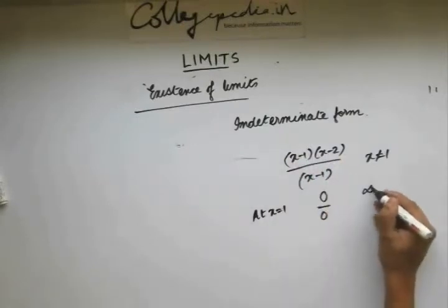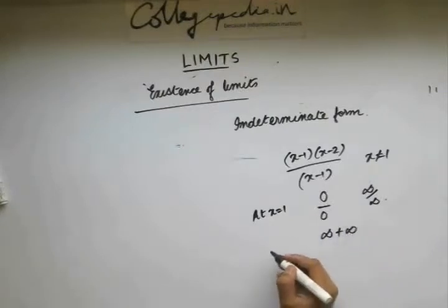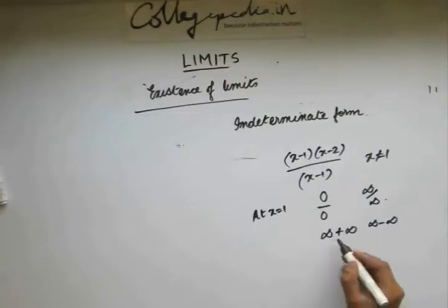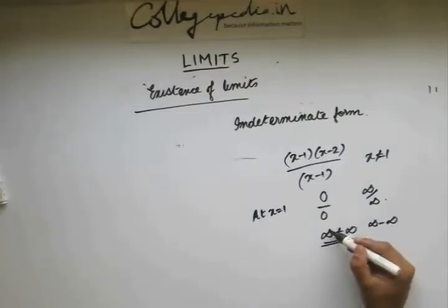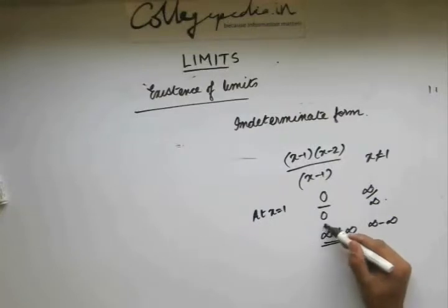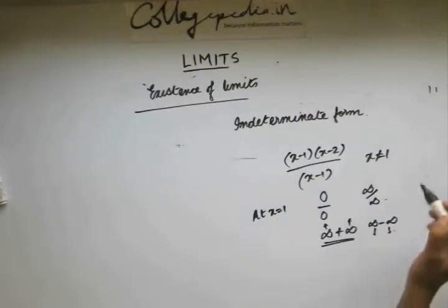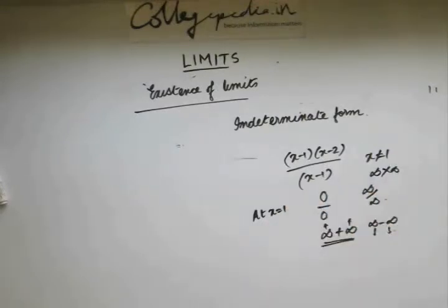A form like 0/0, infinity by infinity, infinity plus infinity, or infinity minus infinity is an indeterminate form because we are not sure what exactly these values are. Similarly with infinity minus infinity and infinity into infinity. So these are some of the indeterminate forms.